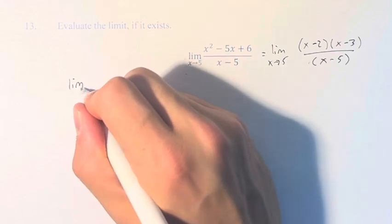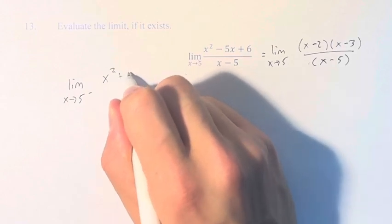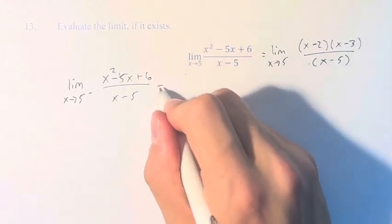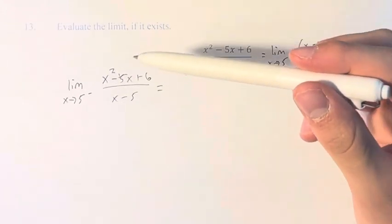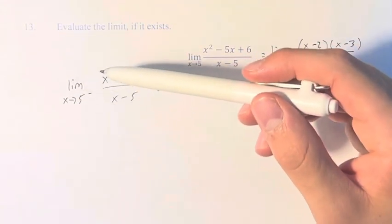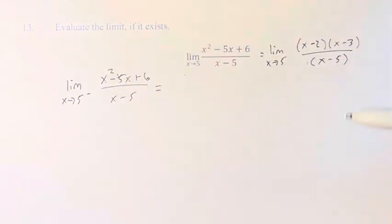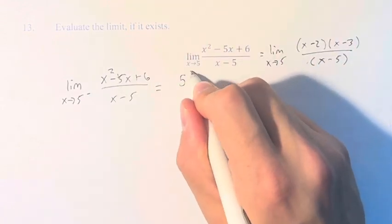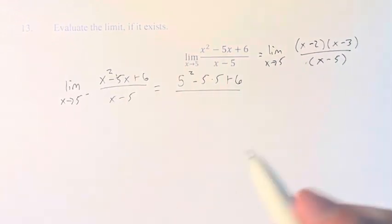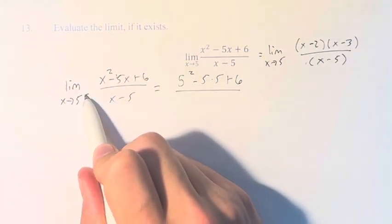So if we have the limit as x approaches 5 from the left of x squared minus 5x plus 6 over x minus 5, what we can do is plug in 5 directly into the numerator. If we don't have any weird domain restrictions or values that are close to 0, then you can plug in your value. So we have 5 squared minus 5 times 5 plus 6.